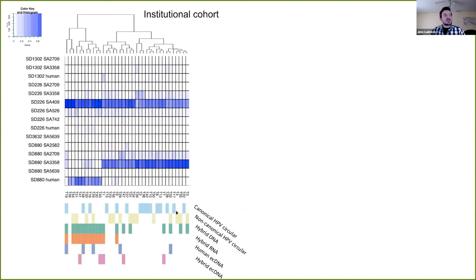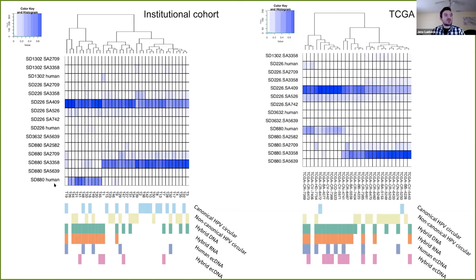We can overlay this information with the splicing data and see that some cancers show splicing from the SD880 junction into human DNA. We observed the same phenomenon in an institutional cohort and in TCGA, a famous cancer database, finding that about one-quarter to one-third of HPV-positive oropharyngeal cancers have circular extra-chromosomal DNA of one form or another.